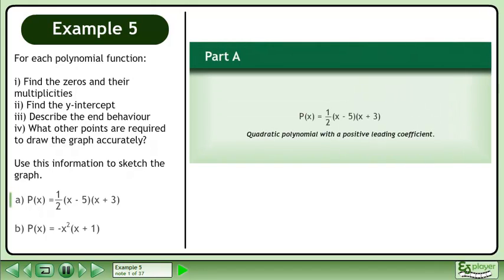For each polynomial function: 1. Find the zeros and their multiplicities. 2. Find the y-intercept. 3. Describe the end behavior. And 4. What other points are required to draw the graph accurately? Use this information to sketch the graph.